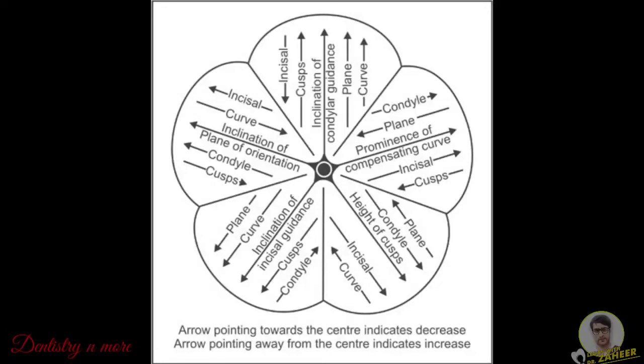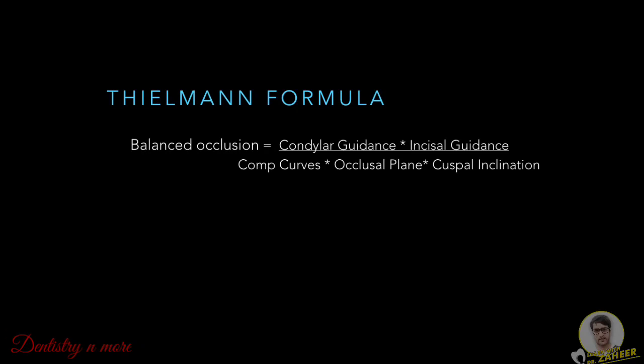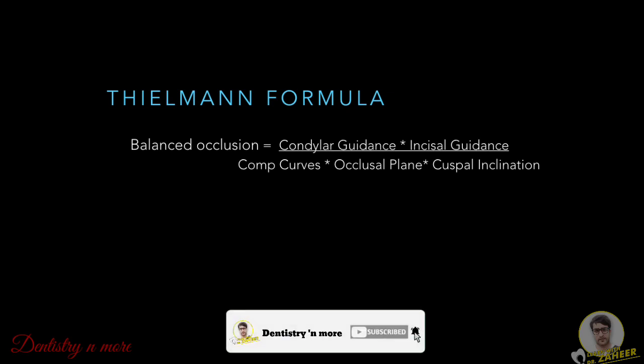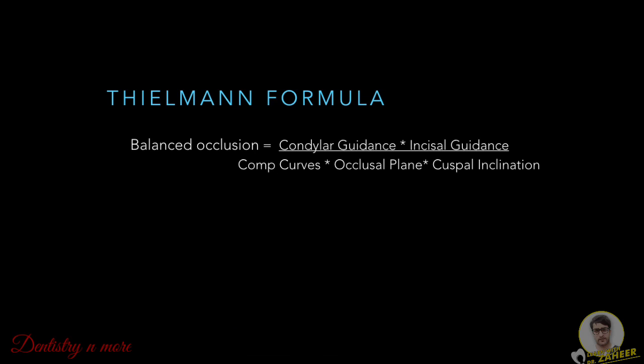Understanding how the different components are interrelated is valuable for achieving good balanced occlusion. If we condense the diagram, we get a formula proposed by Thielmann, which states that balanced occlusion is directly proportional to condylar guidance and incisal guidance, and inversely related to the compensating curves, occlusal plane, and cuspal inclination. Although Hanau's quint has certain drawbacks — which gave birth to Trapezono's concept — it is still in use today. I hope this video was helpful in clarifying concepts related to achieving good balanced occlusion in complete dentures.